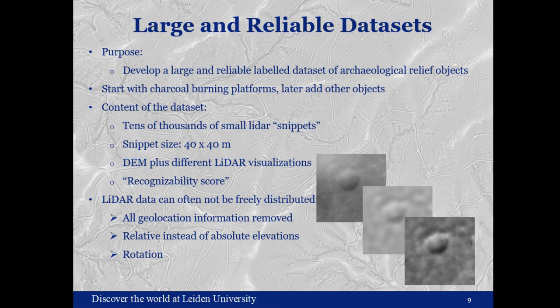We are starting with charcoal burning platforms because they're quite numerous, morphologically well defined, and quite easily recognizable by humans. Later on, we want to add other classes of archaeological objects such as hollow ways, burial mounds, and things like that. The content of the dataset will be tens of thousands of small LiDAR snippets with a size of 40 by 40 meters, with elevation data plus different LiDAR visualizations. An important point is that we want to add a quantitative measure of the recognizability by human interpreters — a recognizability score.